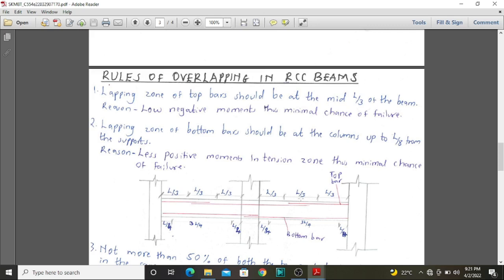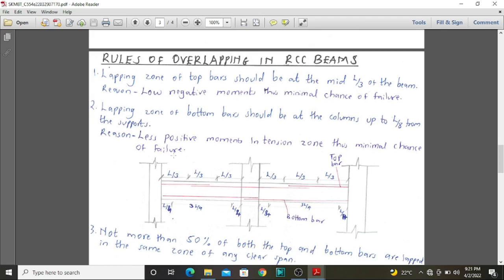Therefore a minimum chance of failure in case of an eventuality. Secondly, lapping zone of the bottom bars should be at the columns up to a distance of L over 8 from the supports. The reason for this is that we have less positive moments within these regions.